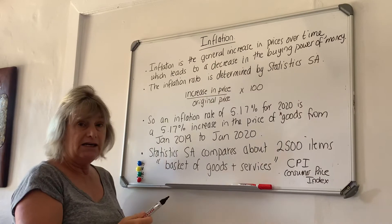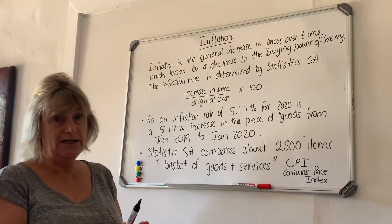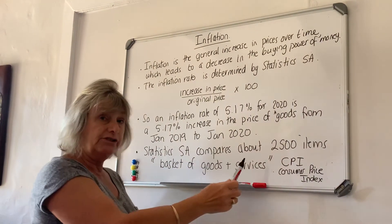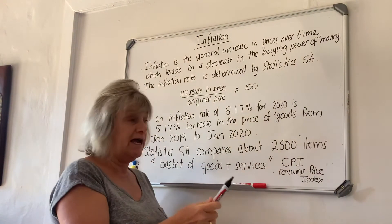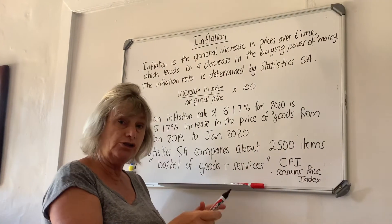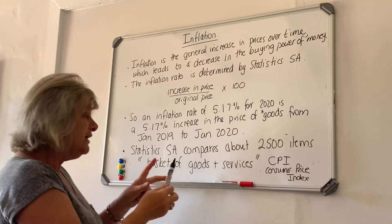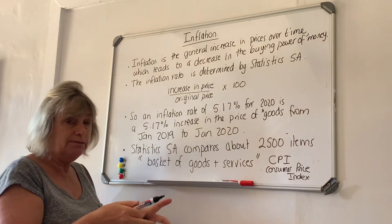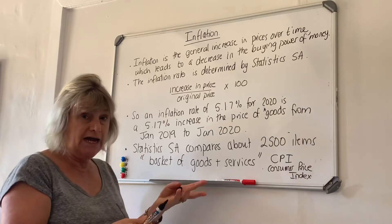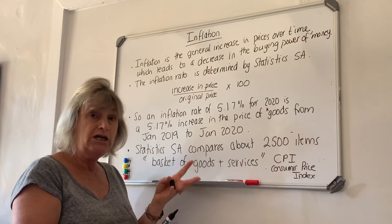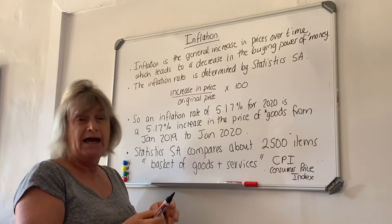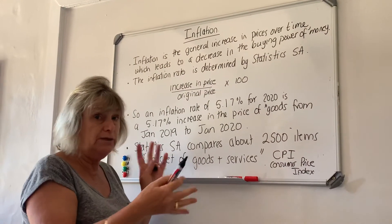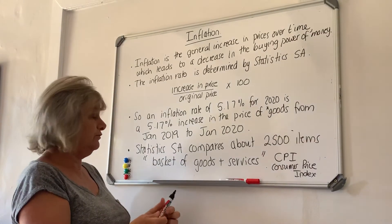Statistics South Africa is the entity that generates our inflation rate and they look at about 2,500 different items. This is known as the Consumer Price Index, or CPI. In this basket of goods and services — it is not a literal basket but an imaginary basket — that would include items like food, fuel, and various other services. It could also include accommodation in a hotel room as part of this basket.